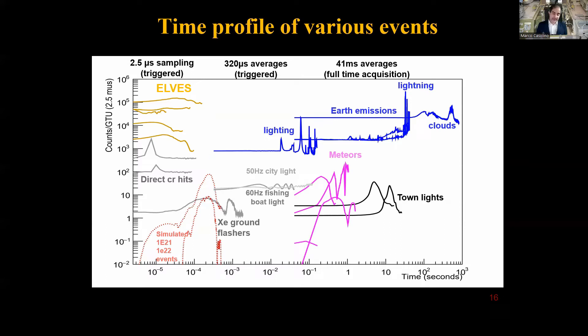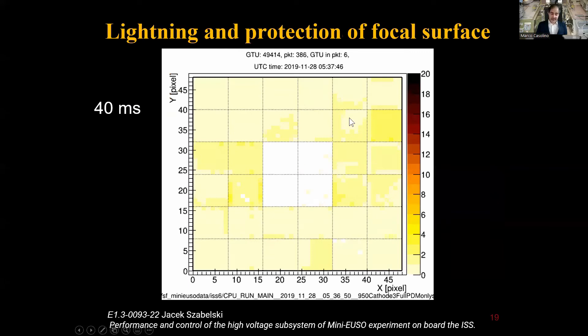We have an acquisition at 320 microseconds so we can see the city lights, 50-60 Hz, the first pass of lightning. Then we make another average and we have 41 millisecond averages which is full-time acquisition. We save data on USB sticks so we have tens of terabytes of data, more than enough to have full-time acquisition at 41 milliseconds. This is for F emission, cloud light, meteors, search for interstellar meteors, strange quark matter, town lights. Here we are in the range of seconds, hundreds of seconds, full orbits, or even seasonal variation.